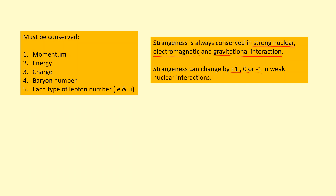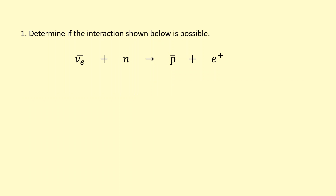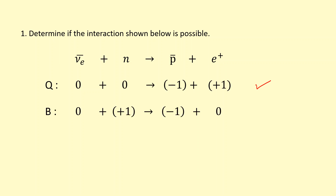Determine if this interaction is possible: an electron anti-neutrino interacting with a neutron turning into an anti-proton and a positron. Starting with charge — the neutrino and the neutron are uncharged, so that's zero on the left. On the right, the anti-proton is minus one and the positron is plus one, so charge is conserved. Checking baryon number: the neutrino has no baryon number, the neutron is a baryon with plus one.